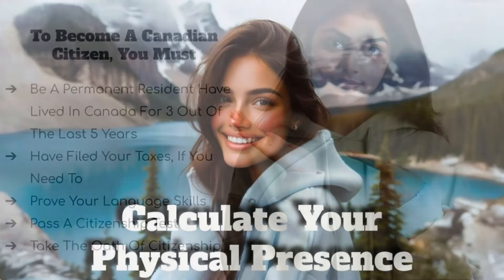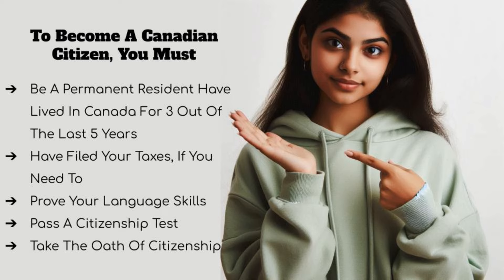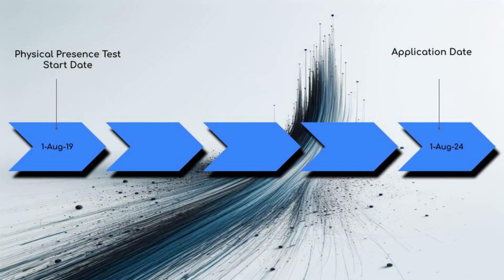Before going into the actual calculator, just a quick recap for anybody who has missed my earlier video. To be able to apply for Canadian citizenship, you should have lived in Canada for at least 1095 days in the five years leading up to your application. So just for example, if you are planning to apply on 1st of August 2024, then you must have lived in Canada for 1095 days since 1st of August 2019.